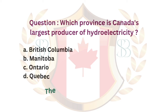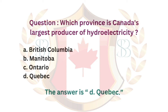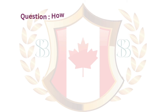Question. Which province is Canada's largest producer of hydroelectricity? a. British Columbia. b. Manitoba. c. Ontario. d. Quebec. The answer is d. Quebec.